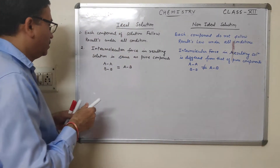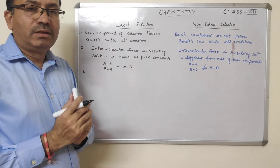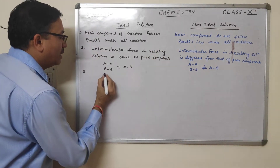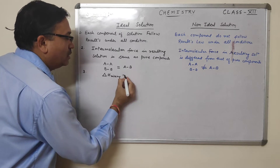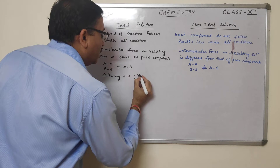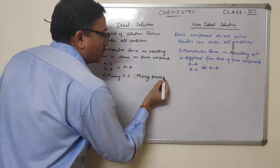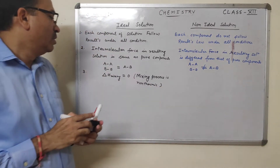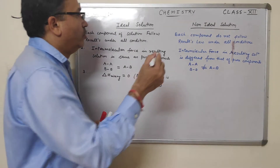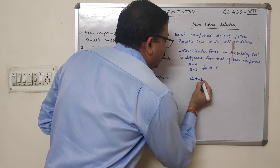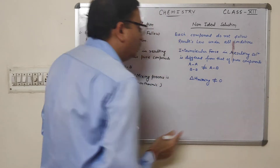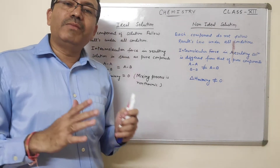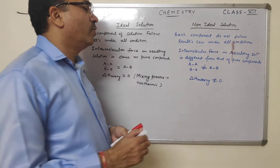Another point: when we mix both components in an ideal solution, no energy changes — no enthalpy changes — take place during the mixing process. This means ΔH mixing equals zero, or in simple words, the mixing process is non-thermic, meaning no heat changes take place while mixing. In case of non-ideal solutions, ΔH mixing is not equal to zero — the mixing process will be either endothermic or exothermic, which we will see in the further classification of non-ideal solutions.